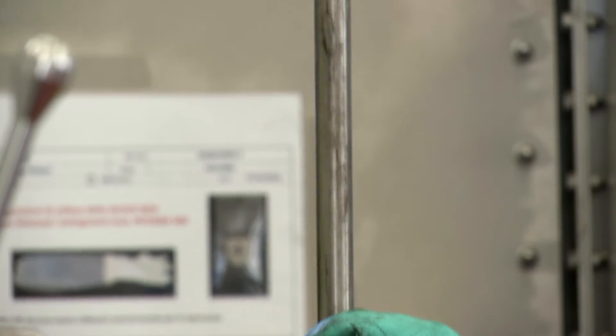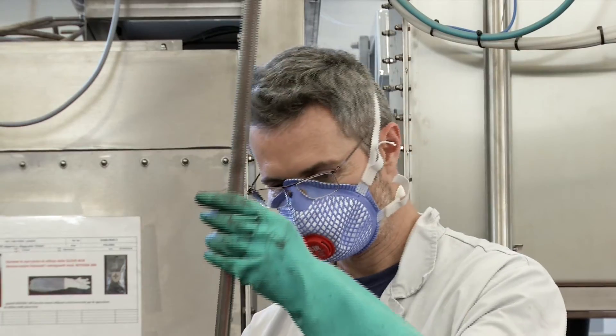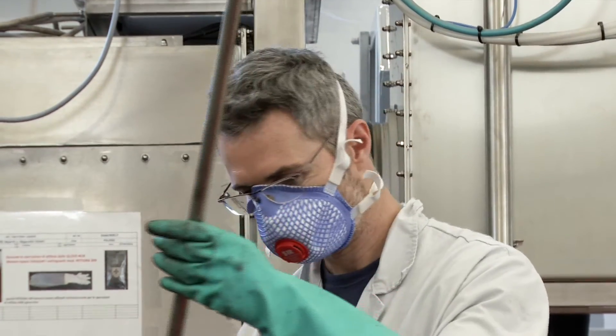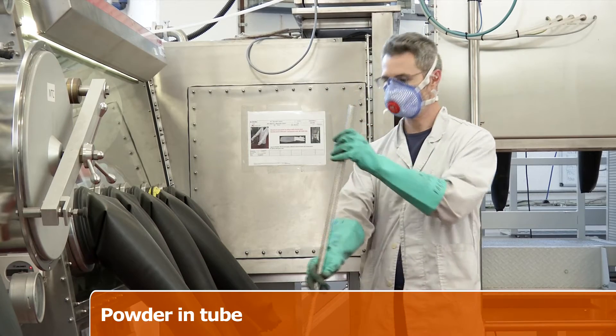The powder compound is then inserted into a metallic tube. This is the first step of a manufacturing process called powder in tube. From this tube, kilometers of wire can be obtained.